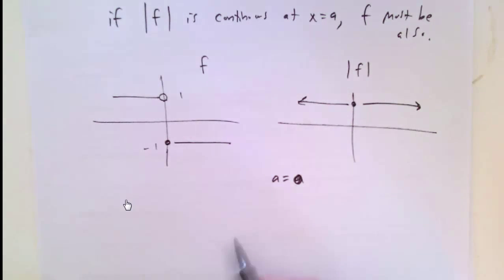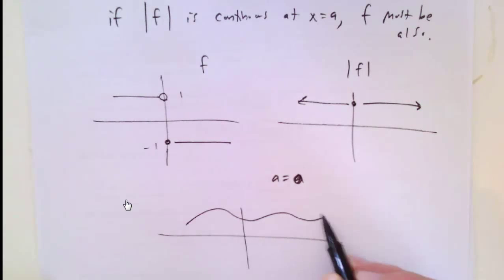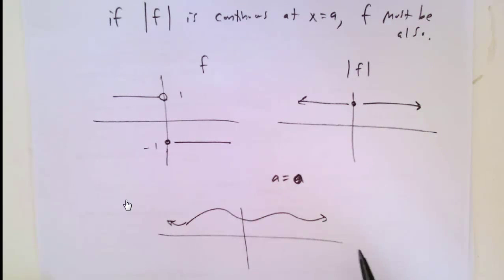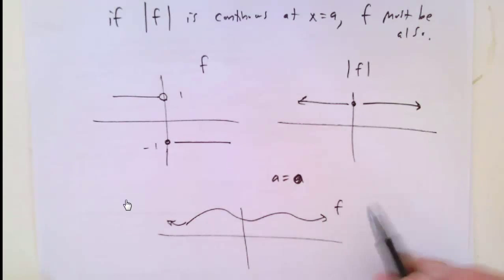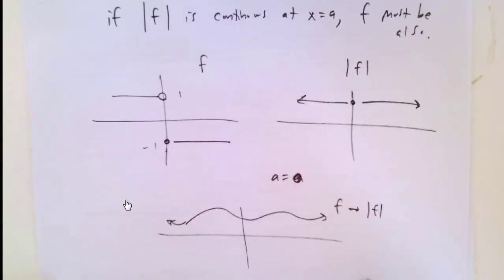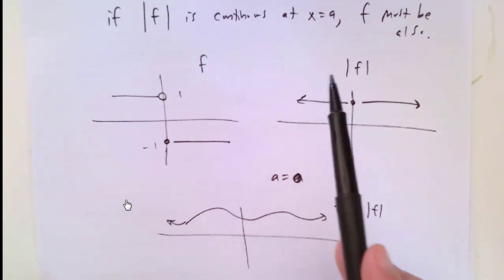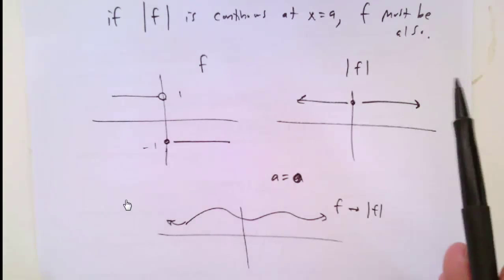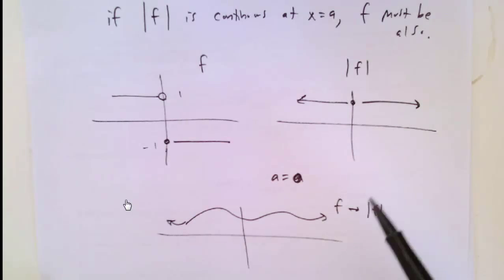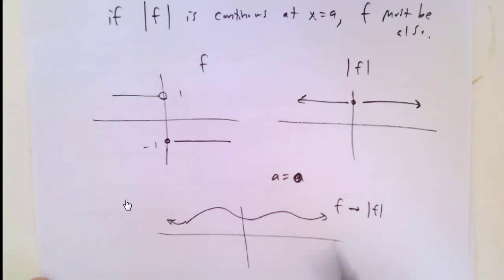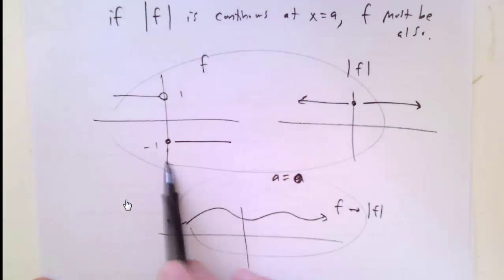It is, of course, sometimes true. For example, any continuous positive function f will be unchanged when you take the absolute value, so the absolute value being continuous also means the original function was continuous. So it's true sometimes, but not all the time.